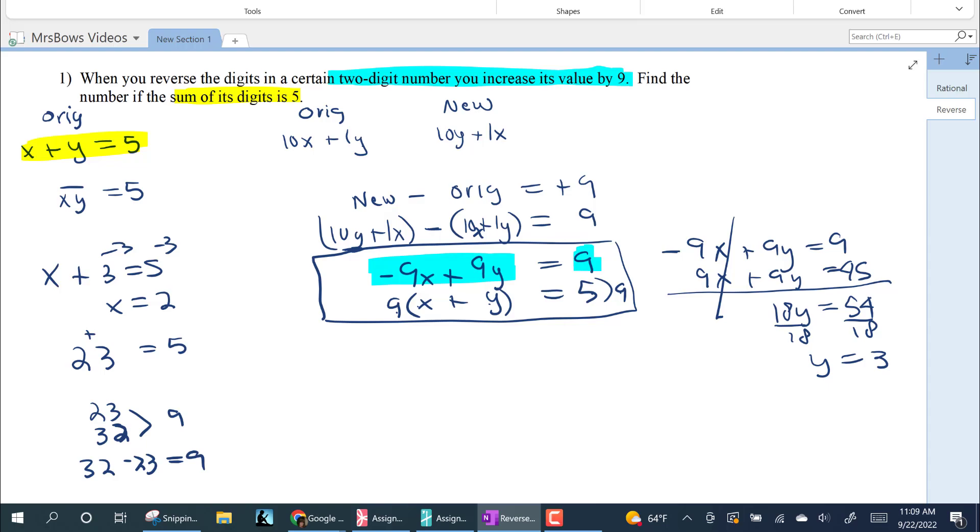If you can remember that this is what it's going to equal each time, is that when you reverse the digits and you do all this other work, you get negative nine x plus nine y is equal to whatever it's reversed. Well, then from now on, you can just say, oh, okay.